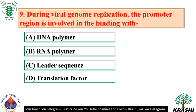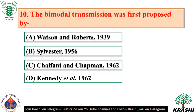Question number 9: During viral genome replication, the promoter region is involved in binding with RNA polymerase — the correct answer is option B. Question number 10: The bimodal transmission was proposed by Schaffent and Schertman in 1962, who discovered this in cauliflower mosaic virus.